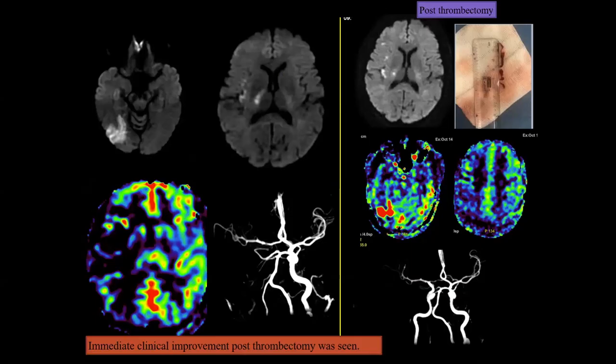Another example with positive perfusion-diffusion mismatch: areas of restricted diffusion and a larger area of hypoperfusion are seen on the initial images. After thrombectomy, the thrombus was removed, the artery was recanalized, and perfusion was restored, as demonstrated on the follow-up ASL color maps.